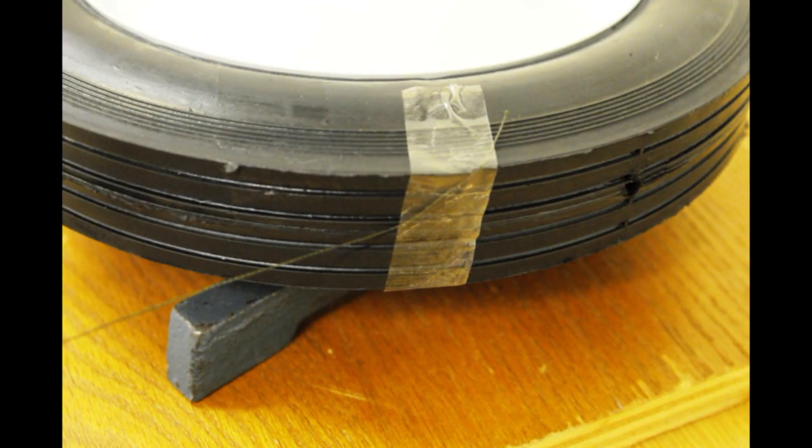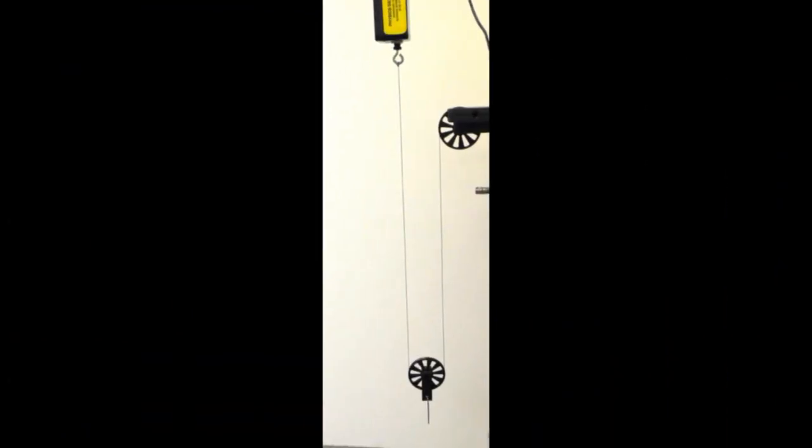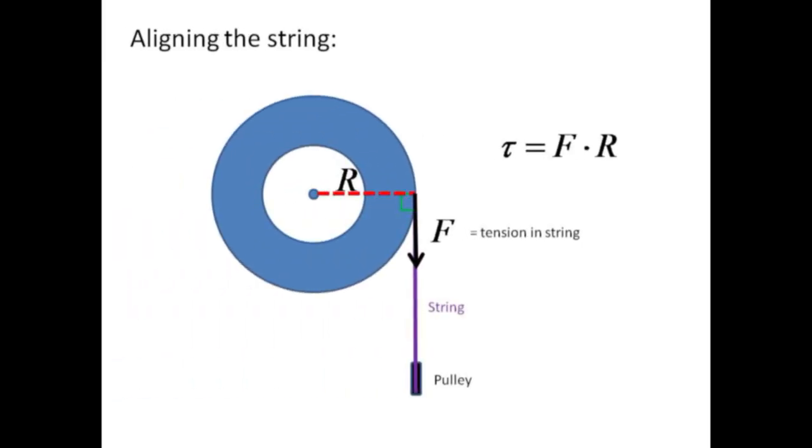Before wrapping the string around the wheel, its end may be fixed to the edge of the wheel using tape. Adjust the positioning of the force sensor to make the string segments to the movable pulley vertical. We don't want the force sensor to be measuring only a component of the string tension. Also, the wheel should be positioned such that the smart pulley is aligned with the string leaving the tangent of the wheel.